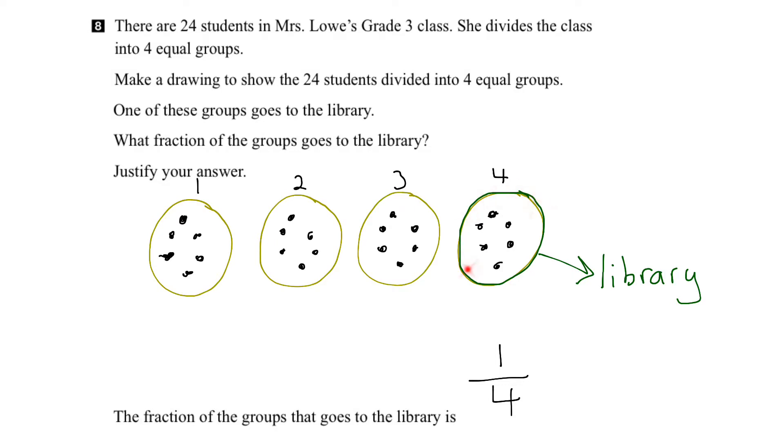So at the top, we put the fraction that we're looking for. And at the bottom, we put all of the options that are available. So all 4 groups go in the bottom, and the one that goes to the library goes on the top.